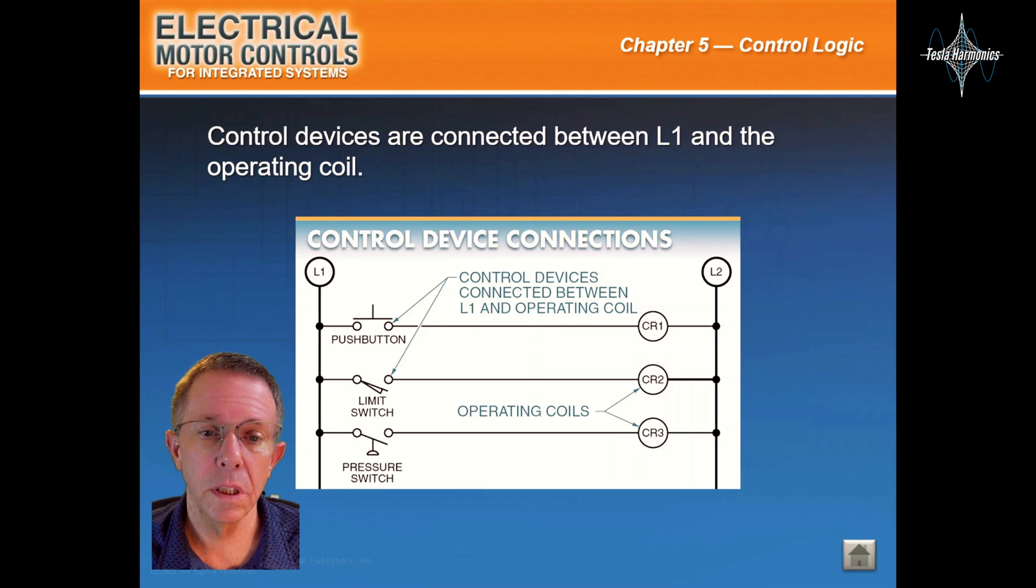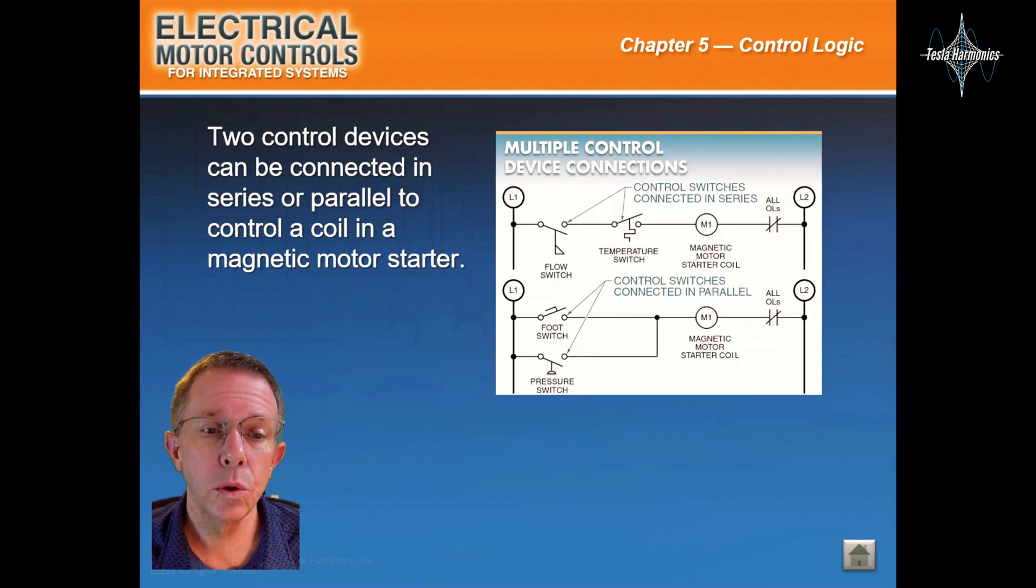Control devices are connected between line 1 and the operating coil. Two control devices can be connected in series or parallel to control a coil in a magnetic motor starter.